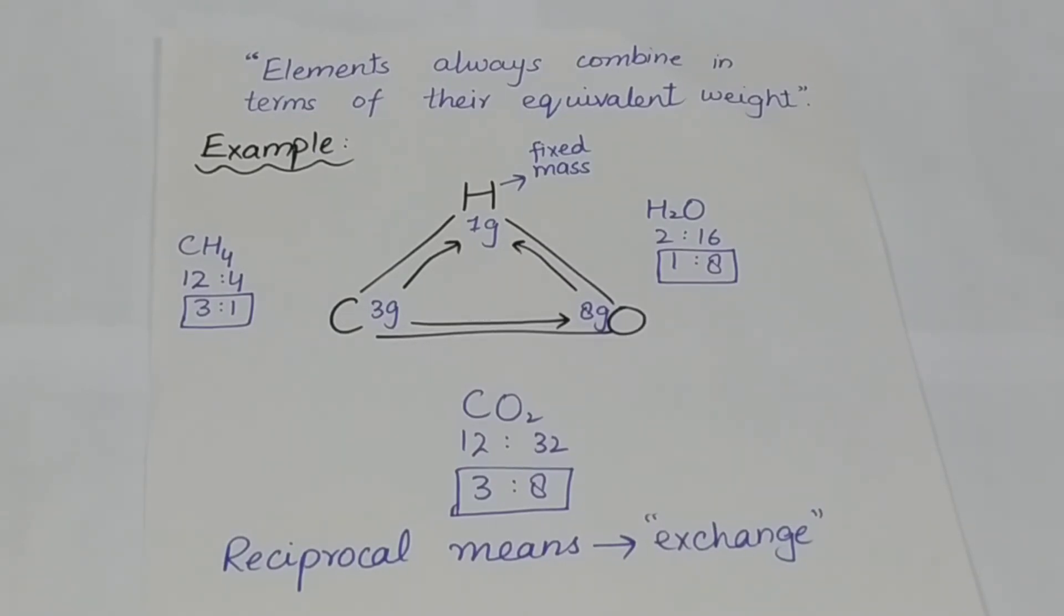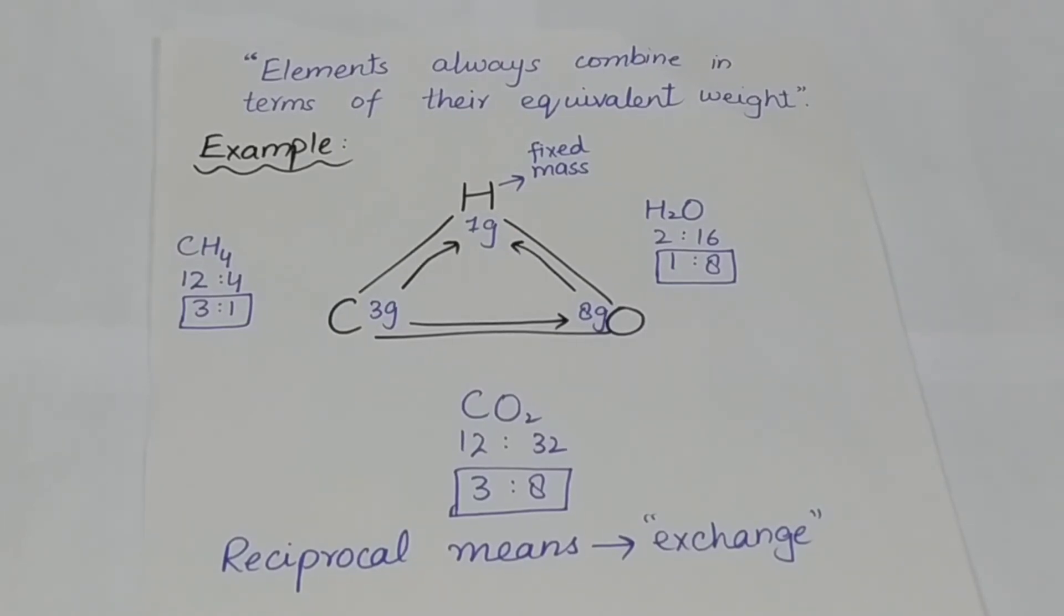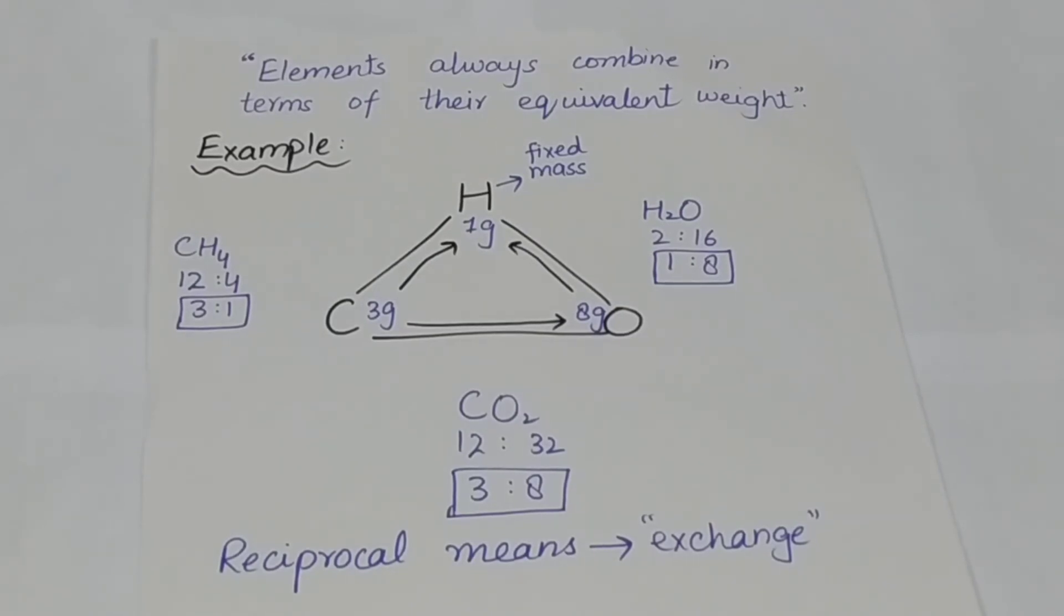Therefore, we write 32 grams of oxygen molecule. When we simplify 12 ratio 32, we get 3 ratio 8.